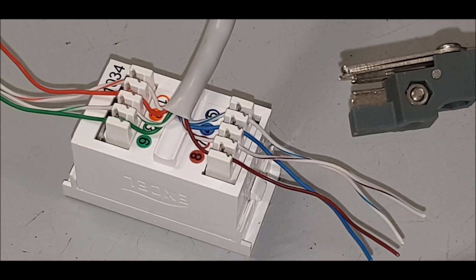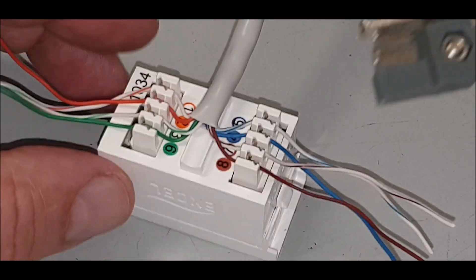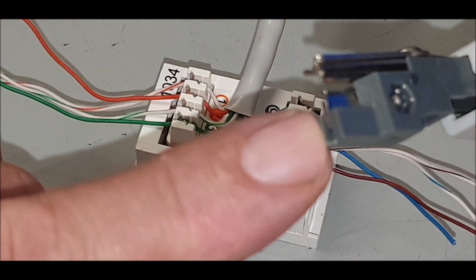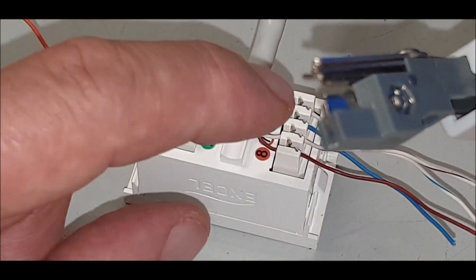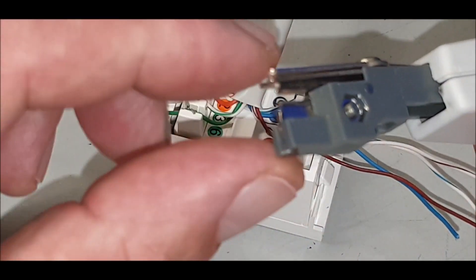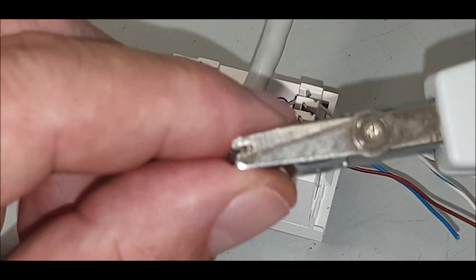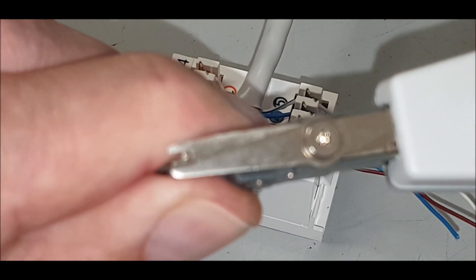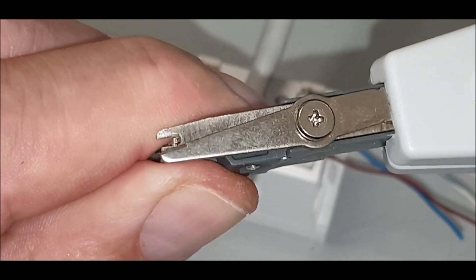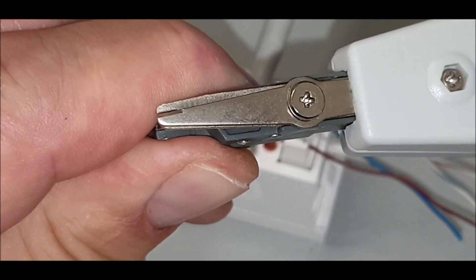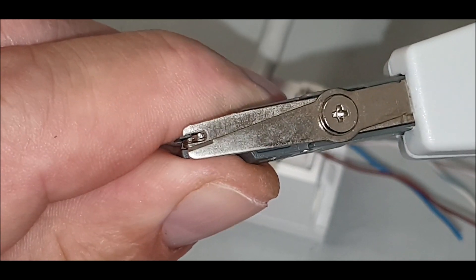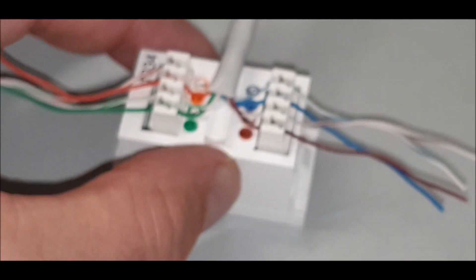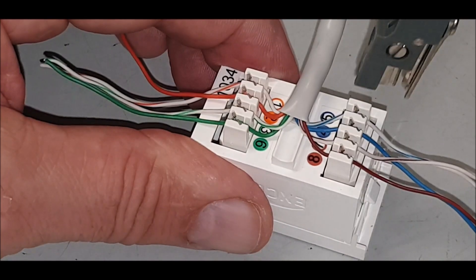When using the punch down tool, you can see this end has a slight groove in it. This will push that cable down and close. The other side has got a cutter. You've got to make sure that cutter goes on the outside of the box.